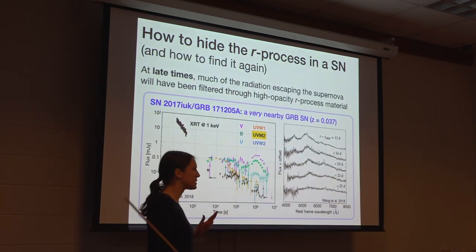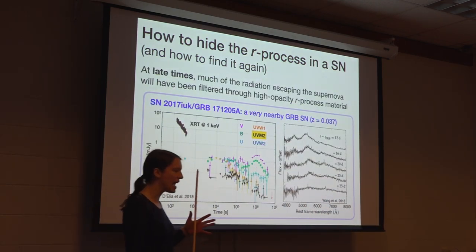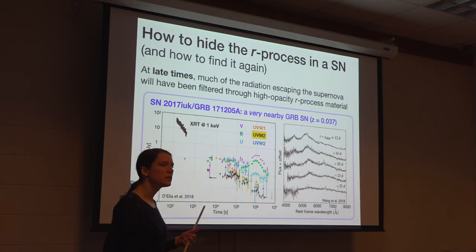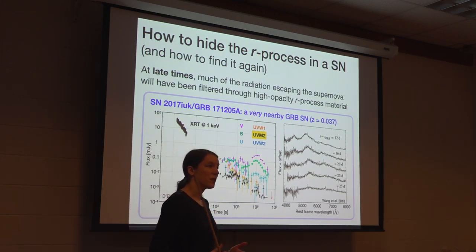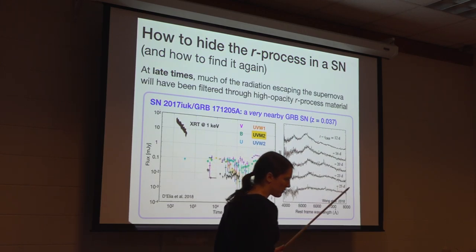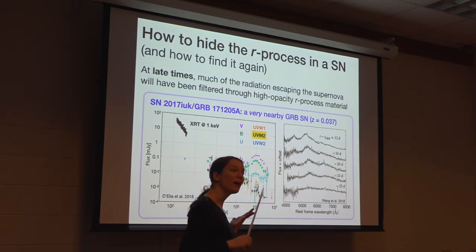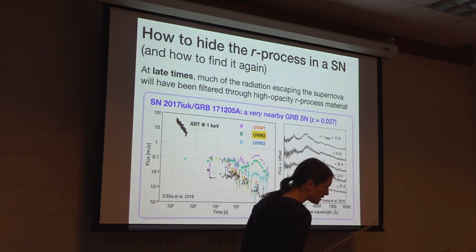That explanation helps us in one regard—it shows a way to hide the signs of the R-process consistently with observations. But that's only one half of the goal, because what we really want is to find a way to discover signs of the R-process, not just argue that it should never be seen. The question we have to answer now is how we are going to look for signs that the R-process is present in some of these explosions.